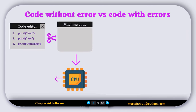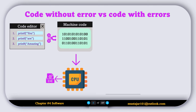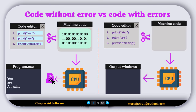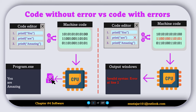Let's discuss how compilers handle code without errors and with errors. Without errors, the compiler reads the entire program at once, converts the whole program into machine code, and creates an executable file that the computer can run. When you double-click that file, you can see the program output. With errors, the compiler reads the entire code one line at a time. If there are any mistakes, it reports all the errors at the end of the compilation process, stops the program from running, and does not produce or generate an executable file.